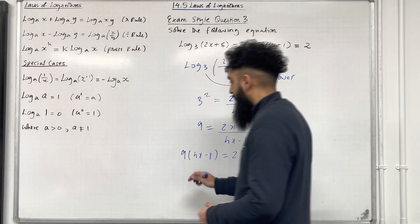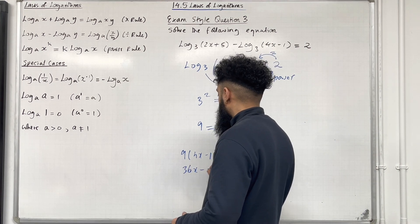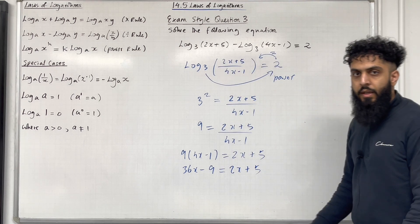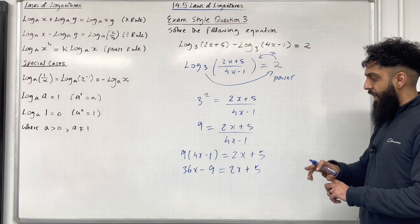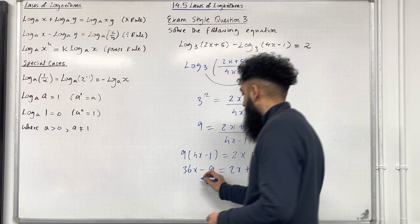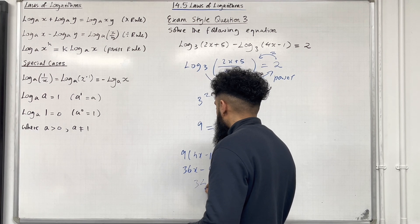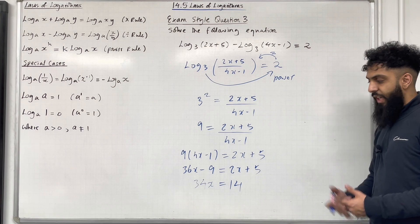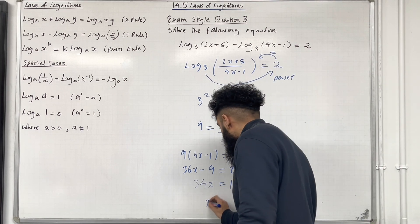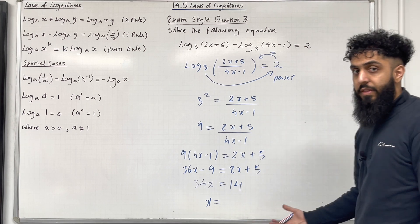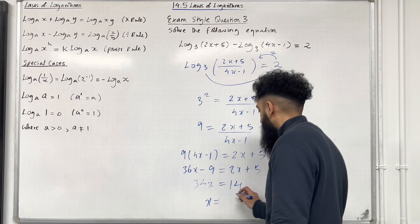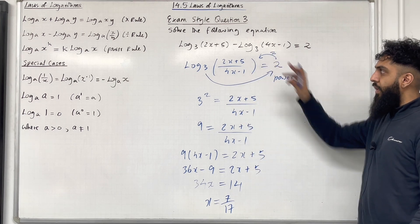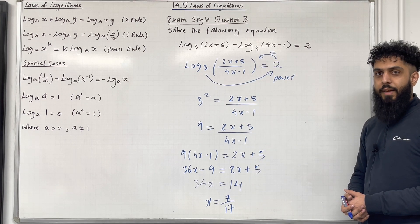Expand the bracket: 36x minus 9 equal to 2x plus 5. Taking the x's to the left-hand side and the constants to the right-hand side gives 34x is equal to 14. Hence, x is equal to 14 divided by 34, which in its simplest form is 7 over 17. That is the solution to this logarithmic equation. This completes exam style question 3.